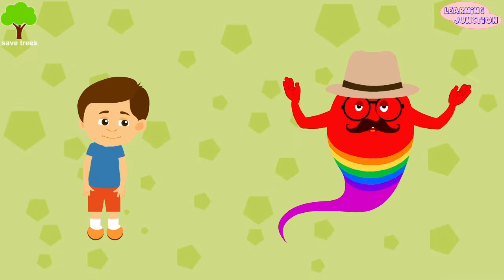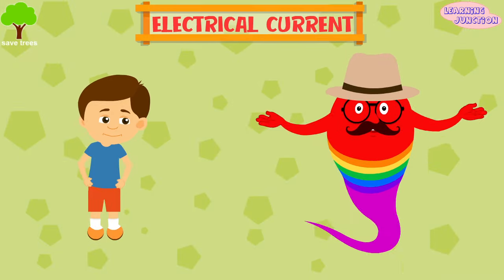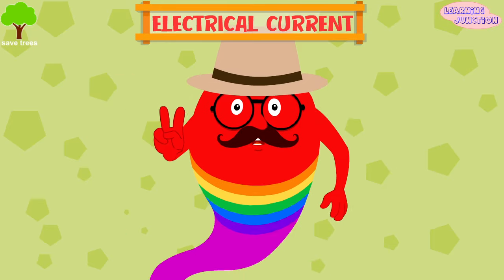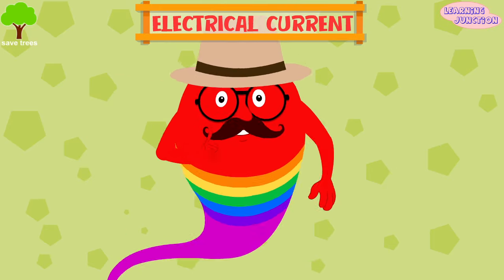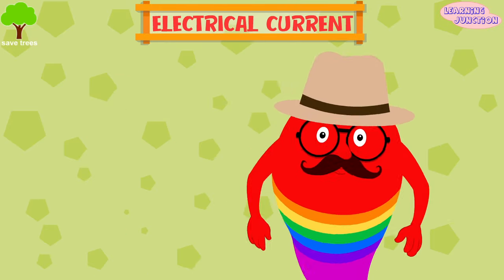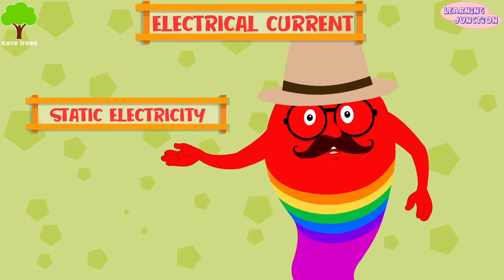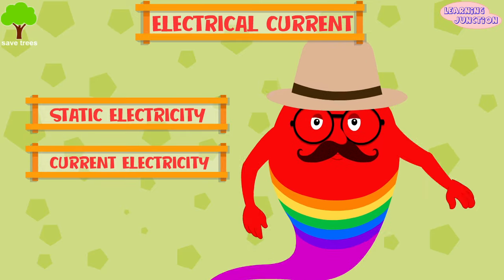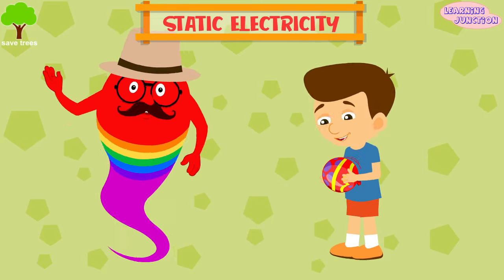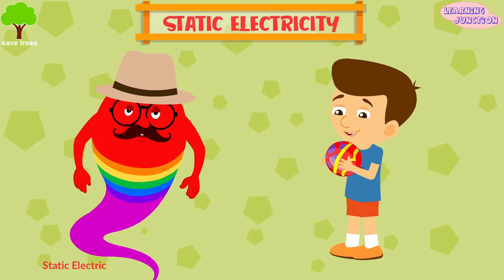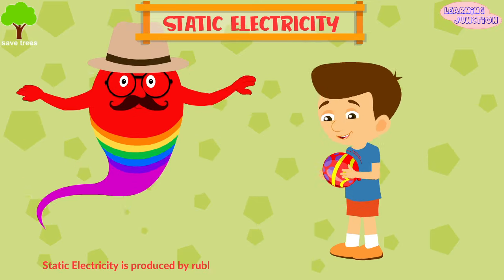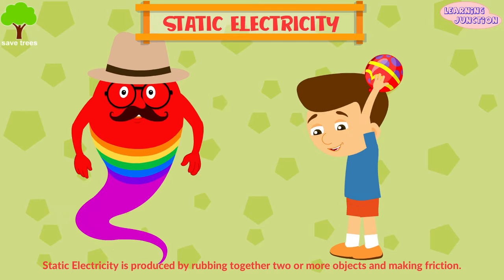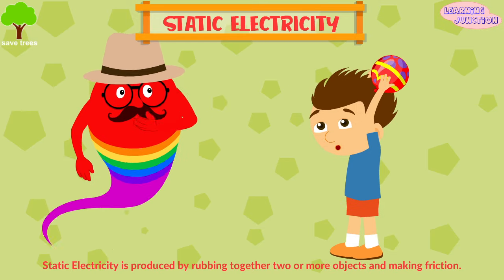Today we'll learn about electrical current. There are two main types of electricity: static electricity and current electricity. Static electricity is produced by rubbing together two or more objects and making friction.